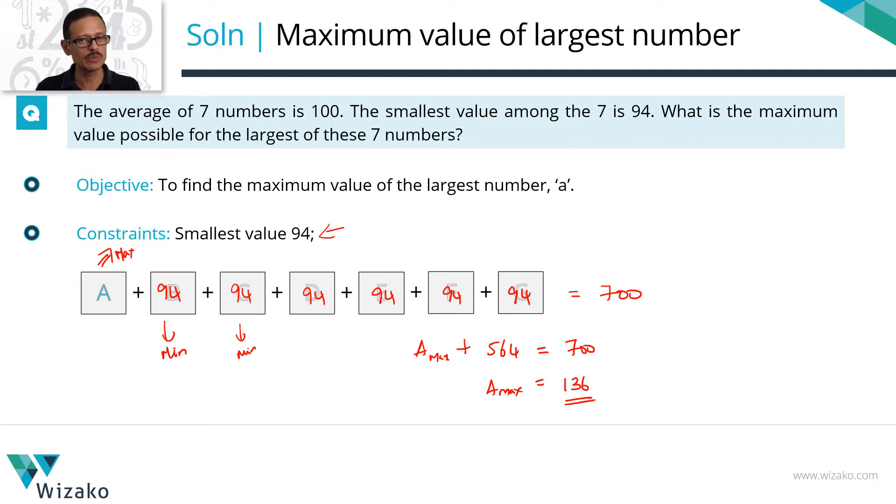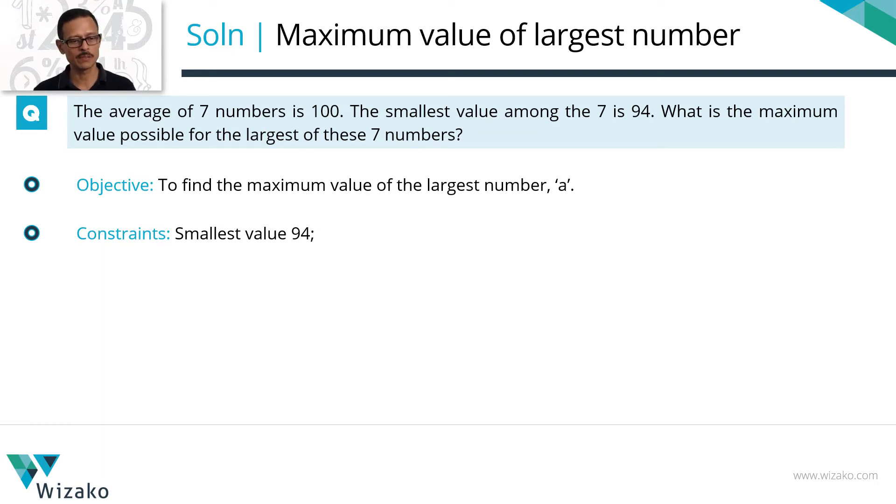So largest value, the maximum value possible for the largest of these seven numbers is 136. Quickly summarize the last bit of discussion in a printed form.